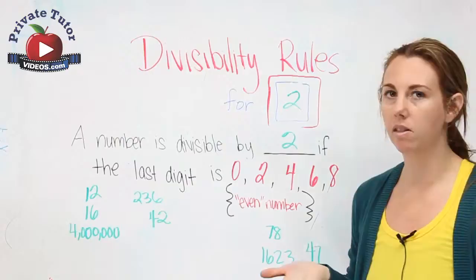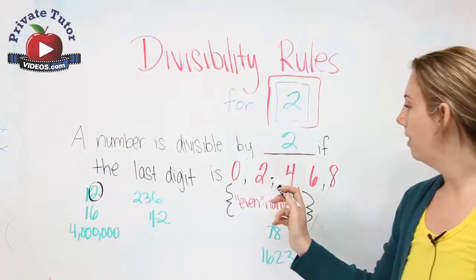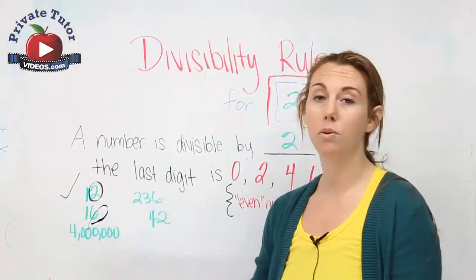So let's take a look at some examples. We have 12. Let's look at its last digit. It's a 2. We find that here. Yep, that's divisible by 2. How about 16? Ends with a 6. Divisible by 2.